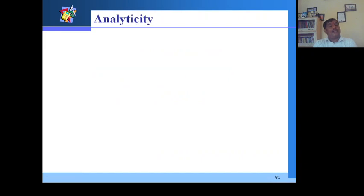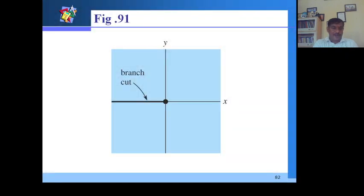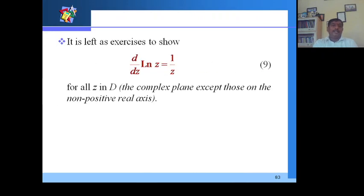The function ln z is not analytic at z = 0 since ln 0 is undefined. Moreover, ln z is discontinuous at all points of the negative real axis. Since Ln z is the principal value of ln z, the non-positive real axis is referred to as a branch cut. As an exercise: d/dz of Ln z = 1/z for all z except those on the non-positive real axis.